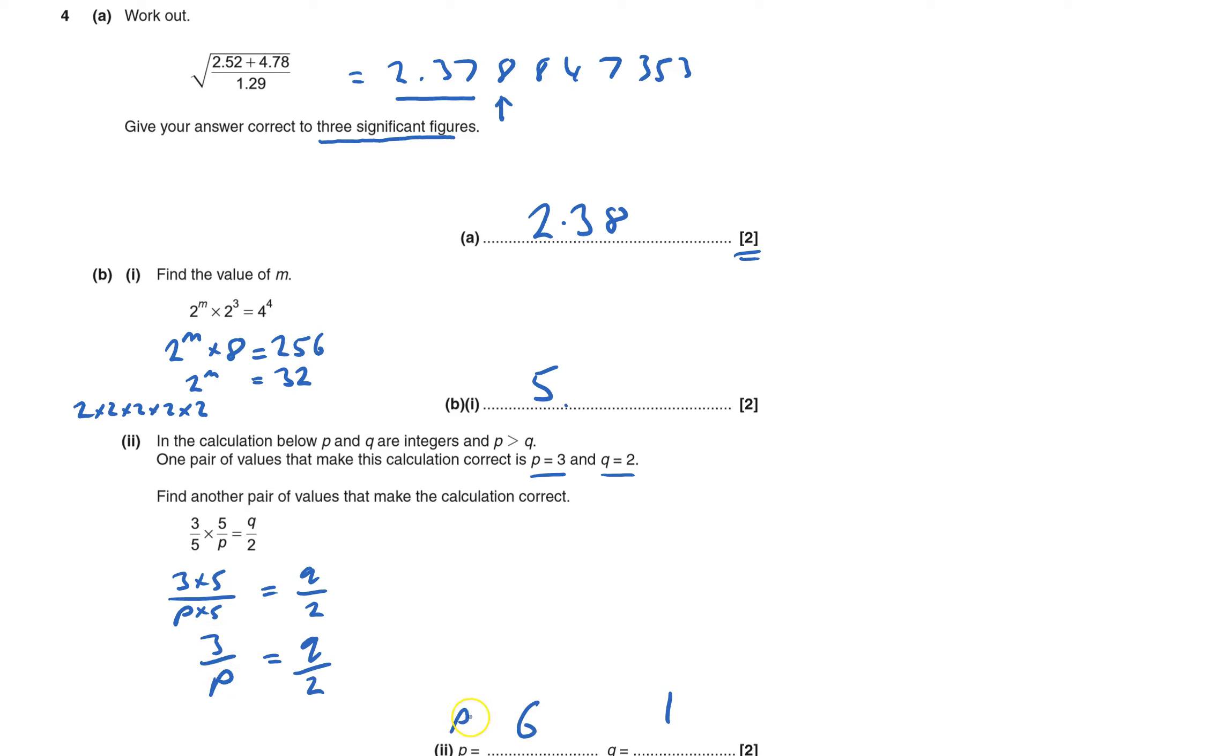p is 6 and q is 1. That's 1 possibility. And that's question 4 done.